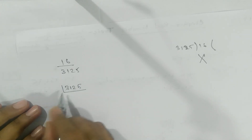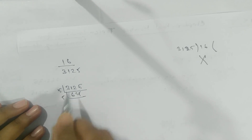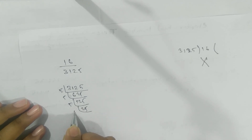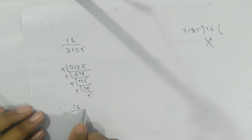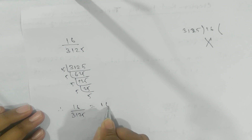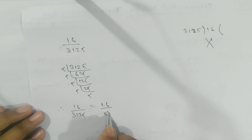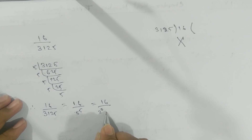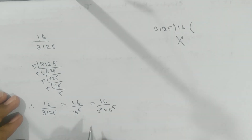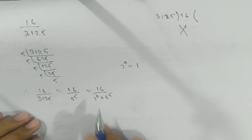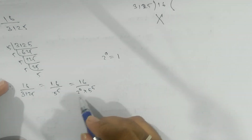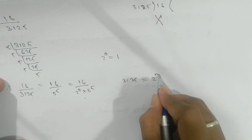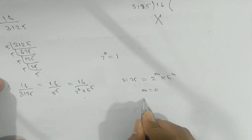By prime factorization of 3125: 3125 = 5 × 625 = 5 × 5 × 125 = 5 × 5 × 5 × 25 = 5⁵. Therefore 16 by 3125 can be written as 16 by 5 to the power 5. There is no factor of 2, so we write 2 to the power 0 into 5 to the power 5, since 2⁰ equals 1. This means 3125 can be represented as 2^M into 5^N where M is 0 and N is 5.